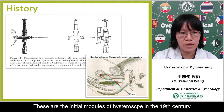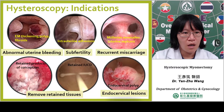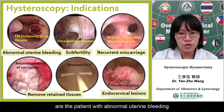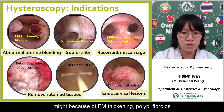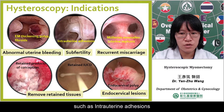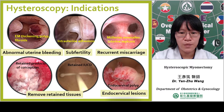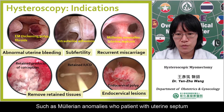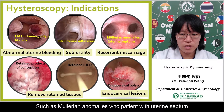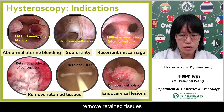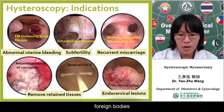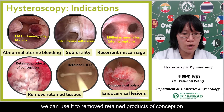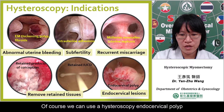These are the initial models of hysteroscopy in the 19th century. The indications of hysteroscopy are patients with abnormal uterine bleeding that might be because of endometrial thickening, polyp, fibroids, or sub-infertility patients such as intrauterine adhesion, recurrent miscarriage, uterine anomalies such as uterine septum, retained tissues, retained intrauterine contraceptive device, foreign bodies, retained product of conception, or endocervical polyps.